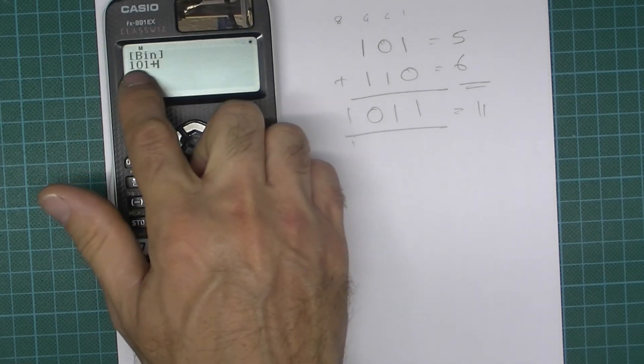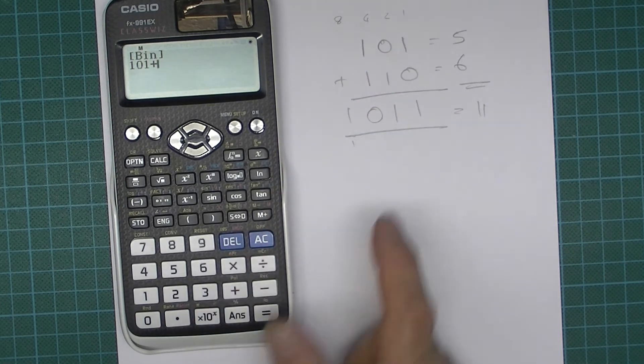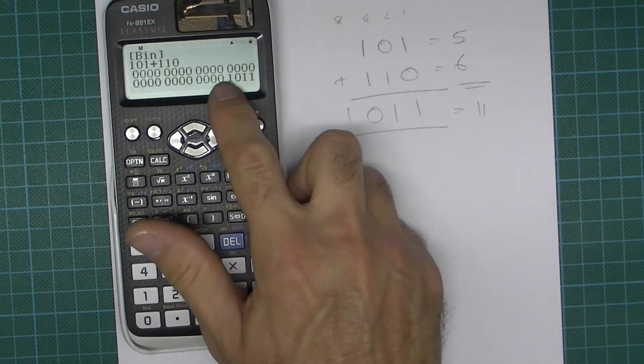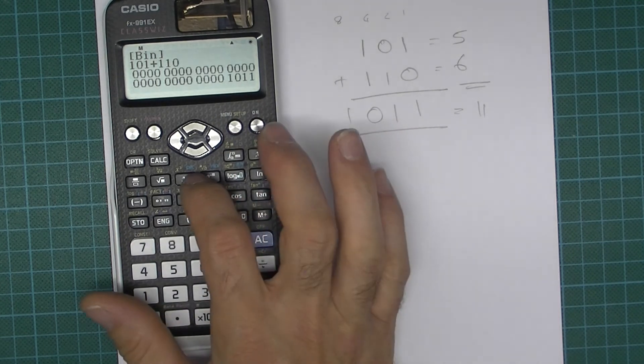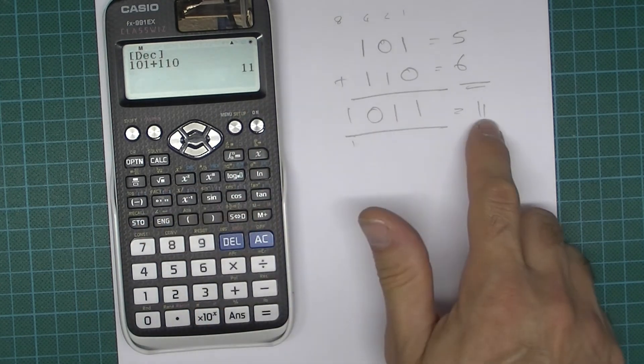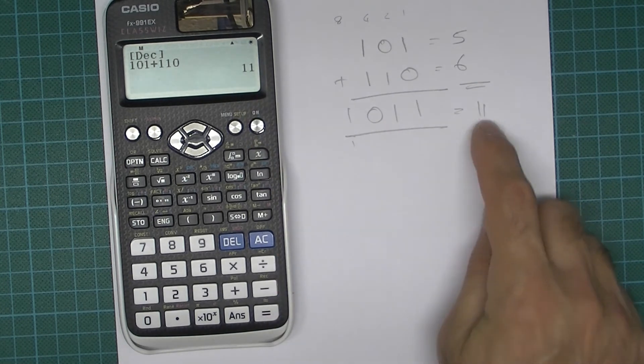Now remember because we're working in binary it's not 101, it is 1, 0, 1 plus 1, 1, 0, and then press enter, gives us 1, 0, 1, 1, and of course if we want to we can go back to decimal which gives us 11 in base 10.